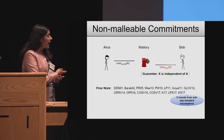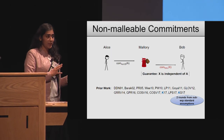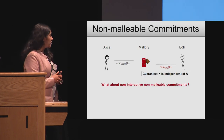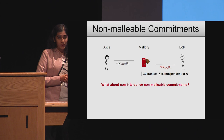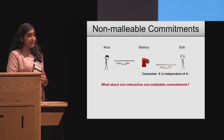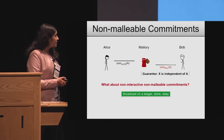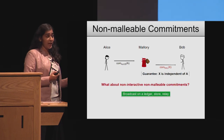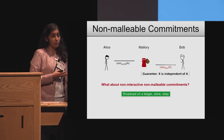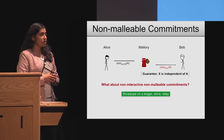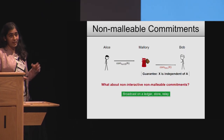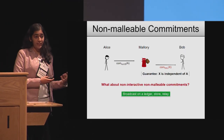So we now have two-round commitments from sub-exponential standard assumptions. However, the more interesting question has been: can we build non-interactive non-malleable commitments from well-studied assumptions? The reason that completely non-interactive non-malleable commitments are interesting is that they don't require any back and forth, so they don't require anyone to wait for the other party to respond. They can be written down, broadcast on a ledger, stored for future use, or relayed from one person to another.